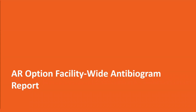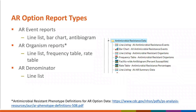More information on the AR option can be found in previous years' trainings on our AUR option webpage, and links to key resources will be provided at the end of today's presentation. There are several analysis reports available for AR option data, including event reports such as a line list, bar chart, or the antibiogram; AR organism reports providing line lists or rate tables for events meeting specific phenotype criteria; and a summary line list for AR denominator data. Today, we're focusing on the antibiogram.